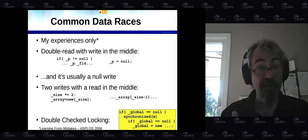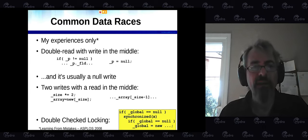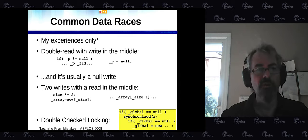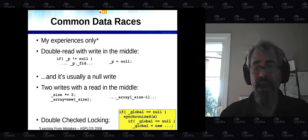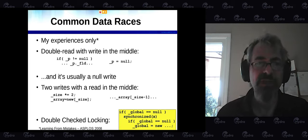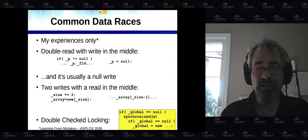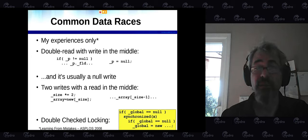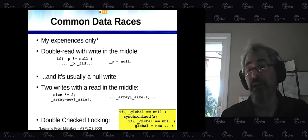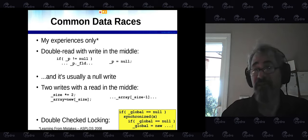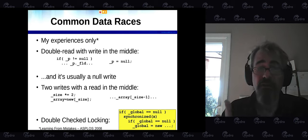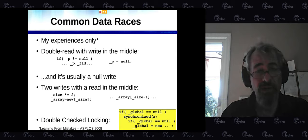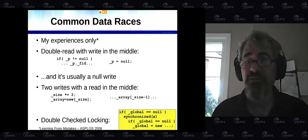Let's look at some common data races. The first one is what we started with: I've tested the field for null, and then used it to chase a pointer. But a second thread came in and did a null write in between those two. The bug is I'm loading it twice — in between the two loads, something changed. The first load was the test, but the second load was already dead. Usually the write is a null write.